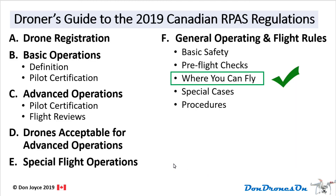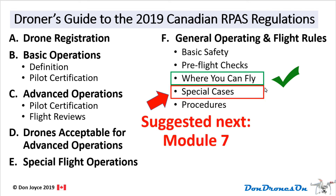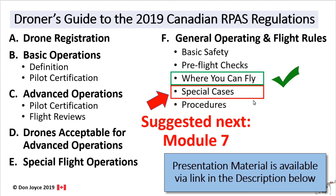That covers all of the regulations in the 2019 Canadian RPAS regulations associated with where you can fly. I would suggest you move on to special cases in the regulations, which is in Module 7. A reminder that the presentation material from this module, as well as the other seven modules in this training series, are available for a nominal fee via the link in the description below. When you purchase that, you get your free Canadian drone pilot logbook in Excel format to help meet the new regulations.